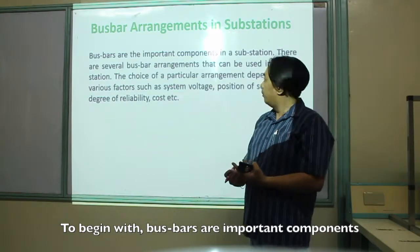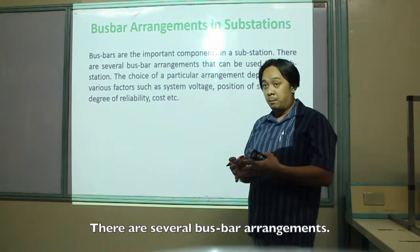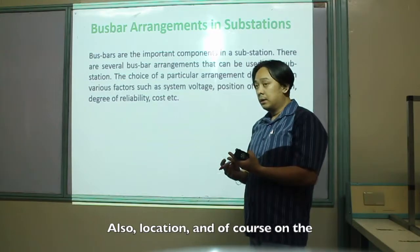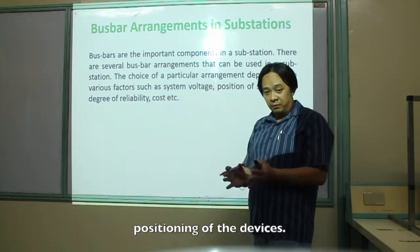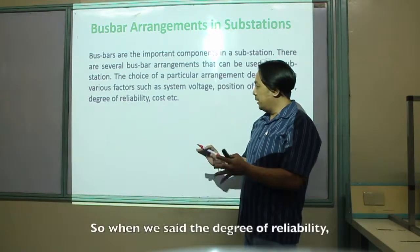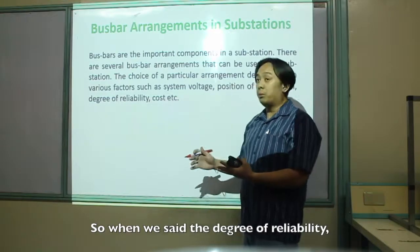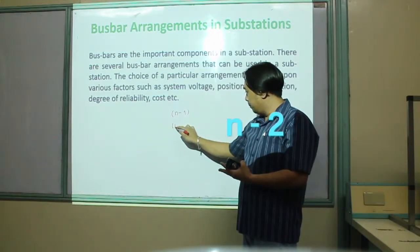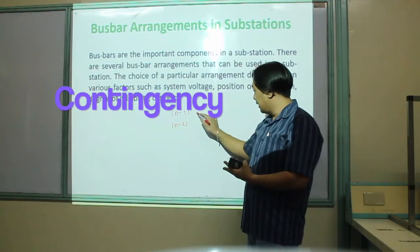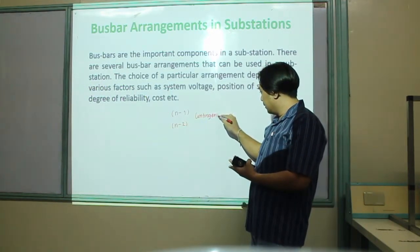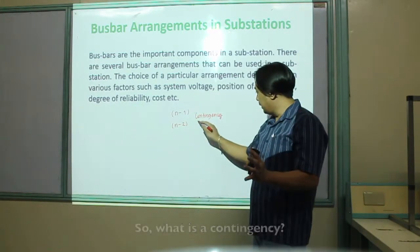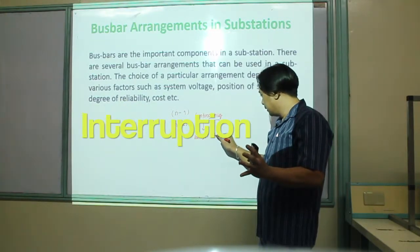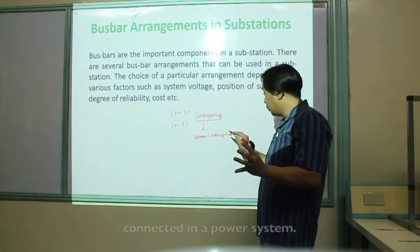Bus bars are important components in a substation. There are several bus bar arrangements. Bus bar arrangements depend on particular voltage, location, positioning of devices, and the degree of reliability. When we refer to the degree of reliability, we're talking about N-1 and N-2 contingency. A contingency is an outage or interruption of certain equipment connected in the power system.